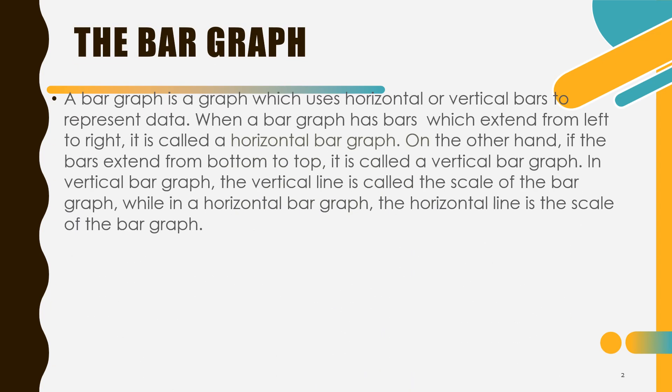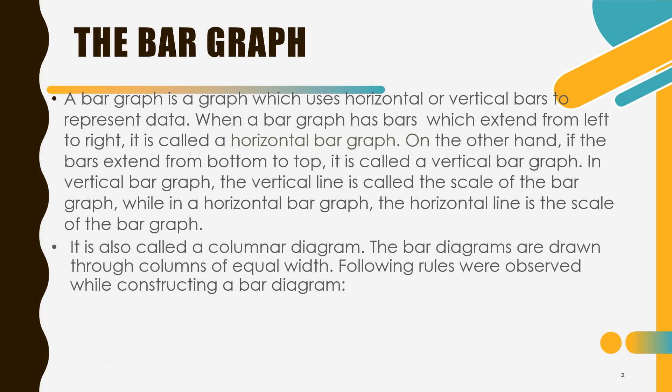The bar graph. A bar graph is a graph which uses horizontal or vertical bars to represent data. When a bar graph has bars which extend from left to right, it is called a horizontal bar graph. On the other hand, if the bars extend from bottom to top, it is called a vertical bar graph. In vertical bar graph, the vertical line is called the scale of the bar graph, while in a horizontal bar graph, the horizontal line is the scale of the bar graph. It is also called a columnar diagram. The bar diagrams are drawn through columns of equal width. Following rules will observe while constructing a bar diagram.